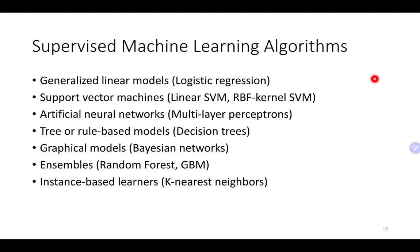Some different supervised machine learning models: generalized linear models like linear regression, logistic regression, and Poisson regression. Support vector machines — linear SVM, RBF kernel SVM, and so on. Neural network models, also called multilayer perceptrons, and deep learning, which is much deeper neural networks. Tree-based or rule-based models — decision trees. Combining decision trees gives ensemble models like random forests and gradient boosting machines. Graphical models like Bayesian networks. Instance-based learners like K-nearest neighbors.